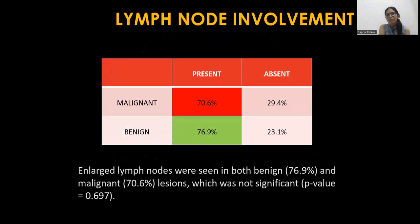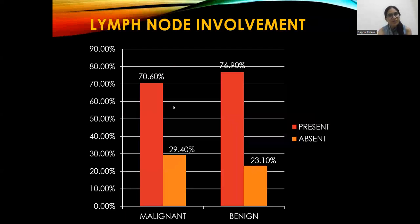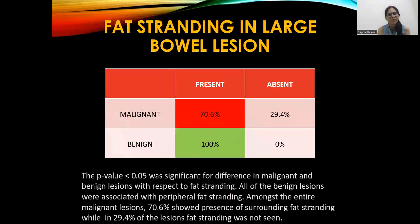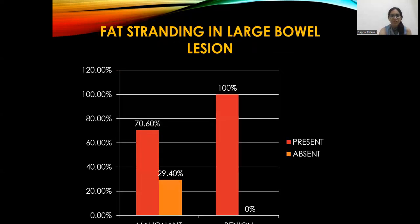Regarding lymph node involvement: large lymph node enlargement was seen in both benign and malignant cases, and the p-value was more than 0.05, meaning it was not statistically significant in our study. Regarding fat stranding in large bowel wall lesions, the p-value was less than 0.05, which is statistically significant. All benign lesions were associated with peripheral fat stranding, while among malignant lesions, 70.6% showed surrounding fat stranding and 29.4% showed absent fat stranding.